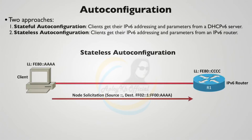The source of the neighbor solicitation is the unspecified address (::), and it's sent to the solicited-node multicast address for the client's link-local address. Every IPv6 address assigned to a client or router interface joins a corresponding solicited-node multicast group, which begins with FF02::1:FF. That accounts for the first 104 bits; the last 24 bits come from the corresponding IP address — in this case, hex 00:AAAA — forming the destination address of the solicitation.